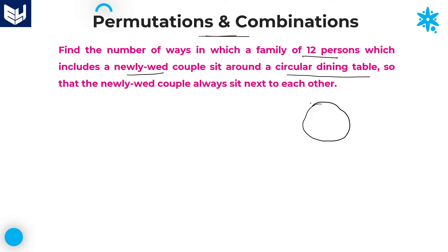He is particularly mentioning a newly wed couple. Suppose we take only the newly wed couple — these are two persons, A and B. These two persons are the newly wed couple. We are still left over with 10 members — remaining 10 members: 1, 2, 3, 4, 5, 6, 7, 8, 9, 10. These 10 members plus these two members make 12 members total.